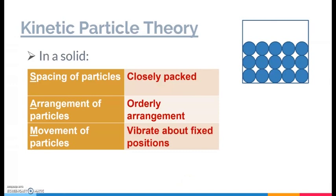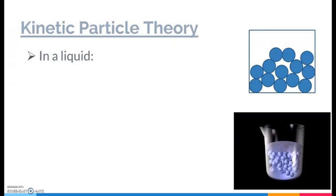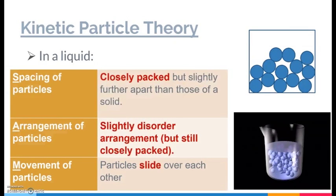How about the liquid state? In the liquid state, clearly from the diagram you can see it's no longer as orderly arranged. In terms of spacing, the particles are still somehow closely packed, but slightly further apart than those of a solid. In terms of arrangement, it's a slightly disorderly arrangement, but still very closely packed together. In terms of the movement of the particles, they simply slide over each other — no longer vibrating about fixed positions. They can move, but only over one another.